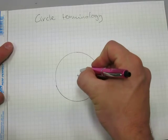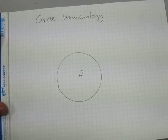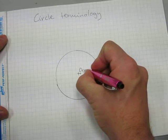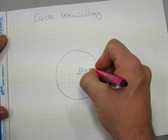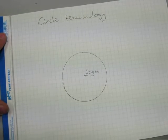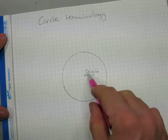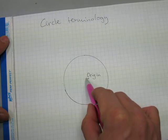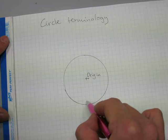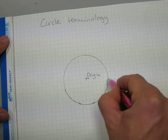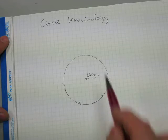A circle has a middle. That middle is typically marked with an O — that's not a zero, that's an O — and it stands for the word origin. Because that is where the circle originates from. The concept is that from this point, all points along the edge of the circle are the same distance away.